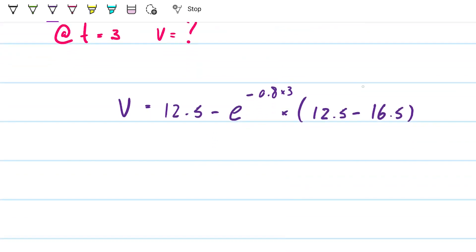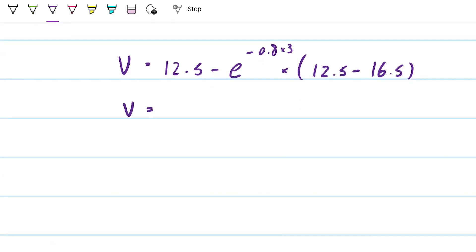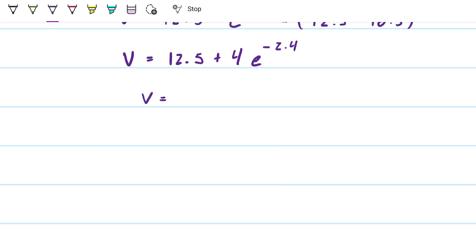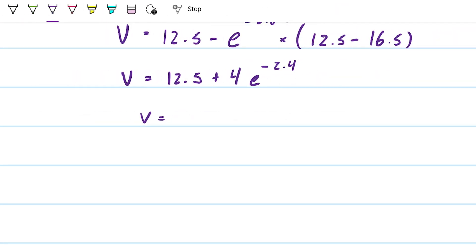Cool, so this turns out to be minus 4. And what I get is 12.5, plus 4 e to the 2.4. All right, so this turns out to be 12.86, and that's going to be meters per second, because the problem statement says so, because the problem statement says that the v is given in meters per second. Okay, cool, so now that's one part of the problem.